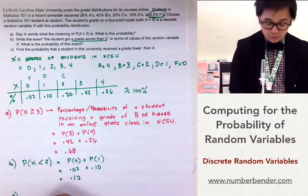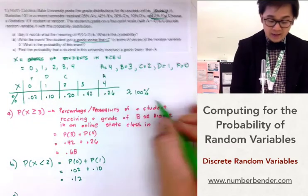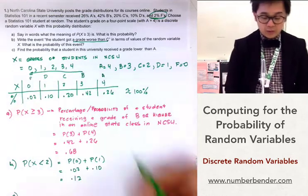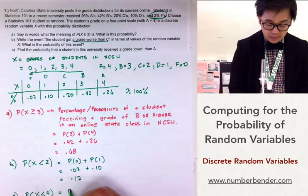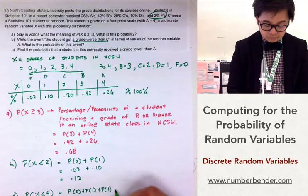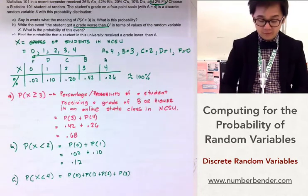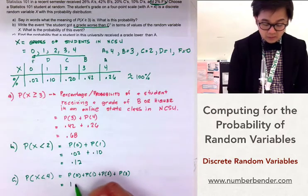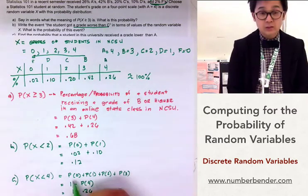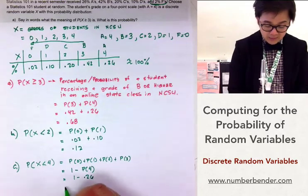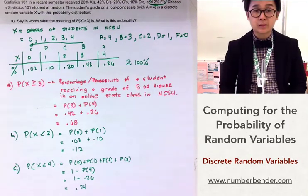For part C, we need to find the probability that a student receives a grade lower than an A. Lower than A means a grade of B and below, so our notation is P(x < 4). One way is to add P(0) + P(1) + P(2) + P(3). Another way is to use the complement: since P(A) = 0.26, we compute 1 − 0.26, which equals 0.74. So about 74% is the probability that a student will receive a grade lower than an A.